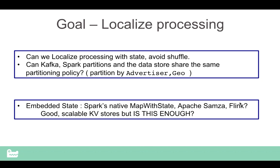Can we localize processing with state and avoid shuffling? Can Kafka partitions, Spark partitions, and the data store share the same partitioning policy to minimize shuffles? Options include Spark's 'map with states' paradigm, or stream processing systems like Apache Samza and Flink that support state management inside the stream processing layer. But the question is: are good scalable key-value stores really good enough?